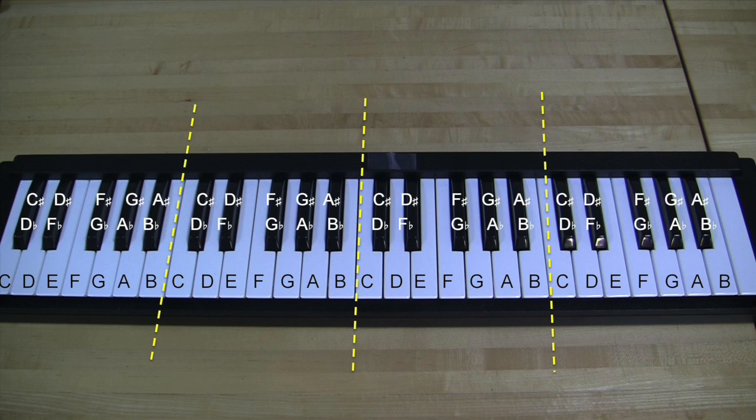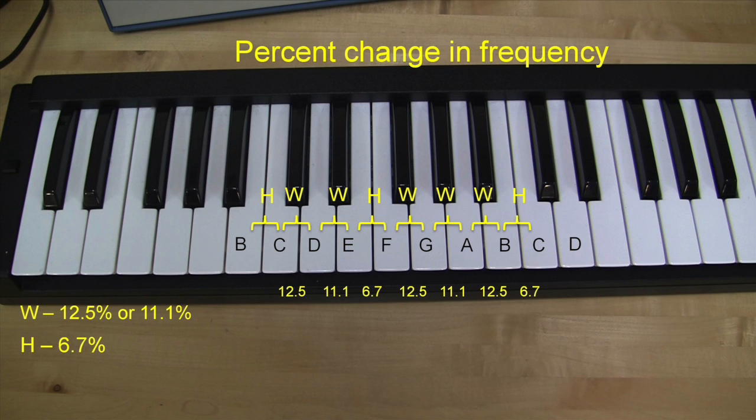The black key to the right of G is called G sharp or A flat. Once you tune that, you can now get a triad E, G sharp, B which again has the ratio of 4x5x6.